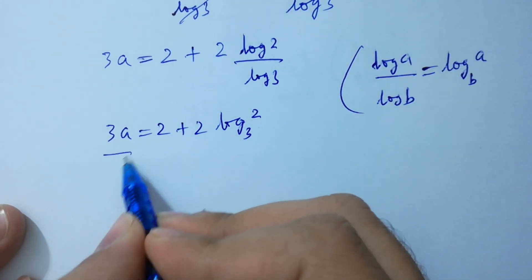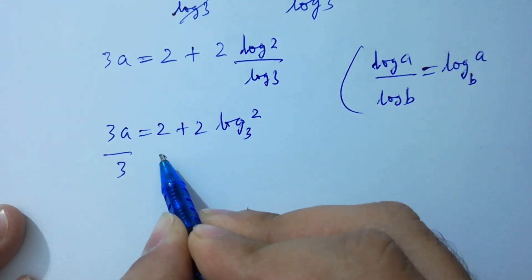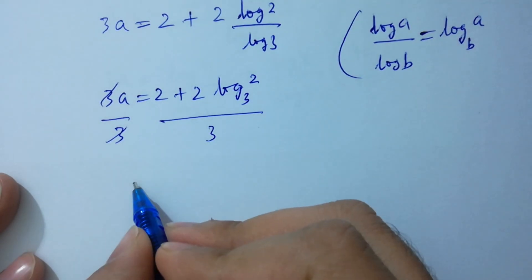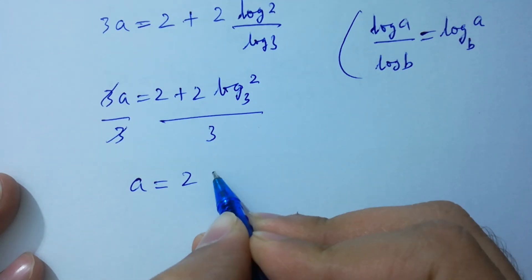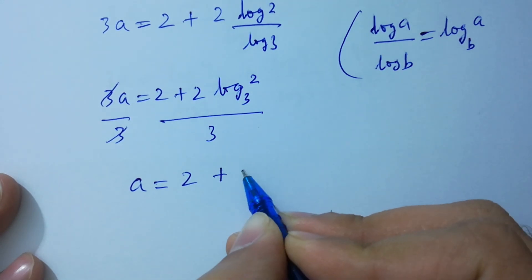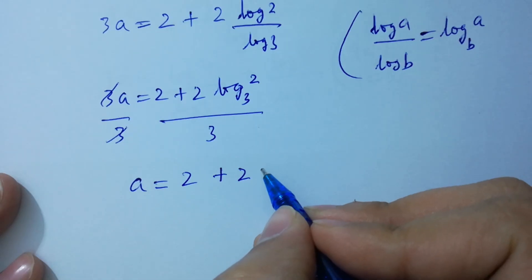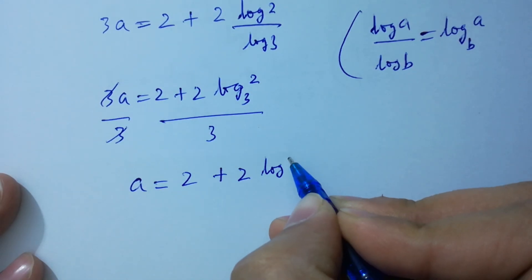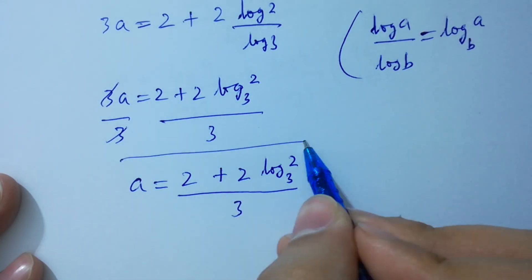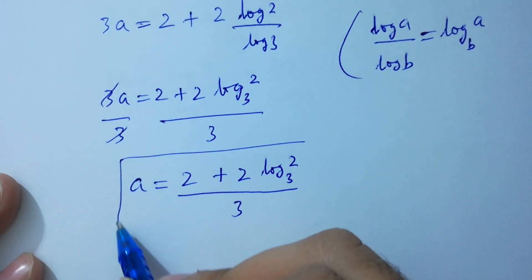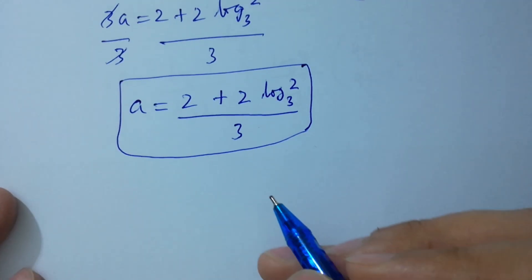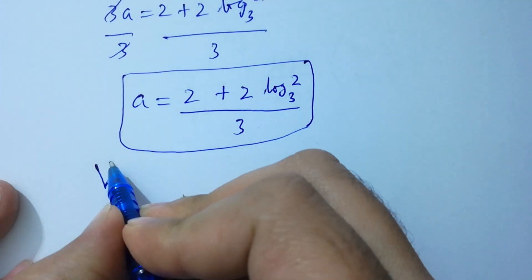Dividing both sides by 3, the 3s cancel, giving a equals 2 plus 2 log 2 to the base 3, all over 3. This is the value of a. Now verify.